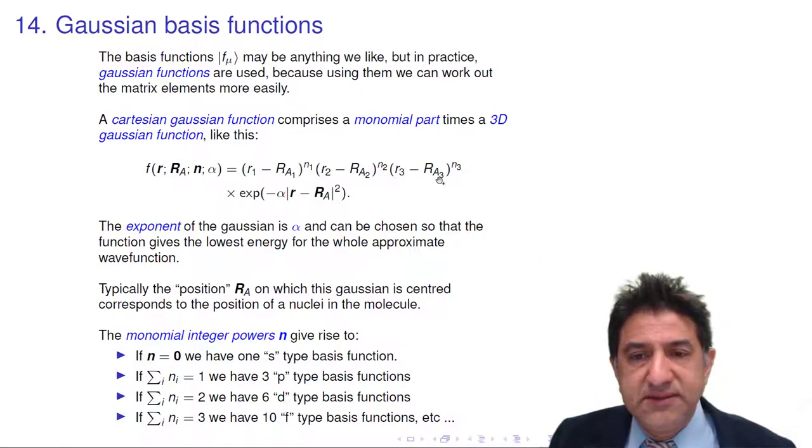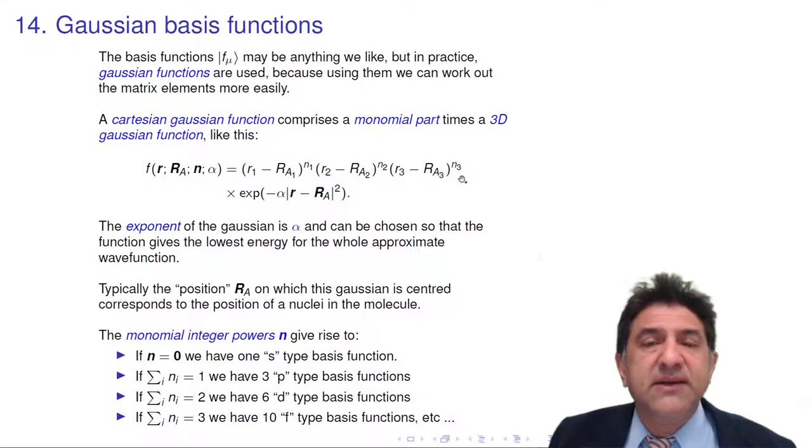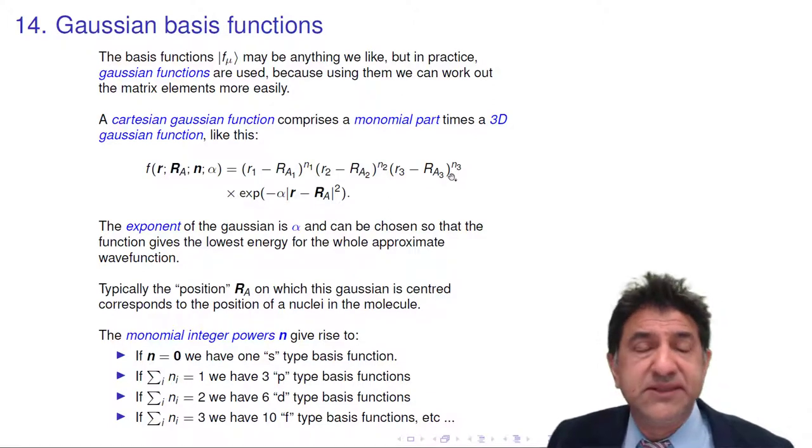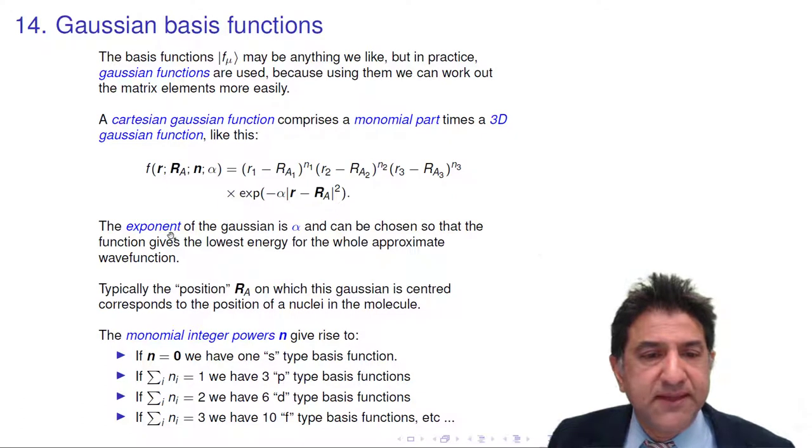I've used 1, 2, 3 because X, Y, Z is annoying. When you do mathematics, it's easier to have 1, 2, 3, because you can sum I equals 1, 2, 3. Otherwise, you would have to do sum X, Y, Z. So that's the exponent. So this Gaussian function depends on a series of variables. And those are the functions we use.